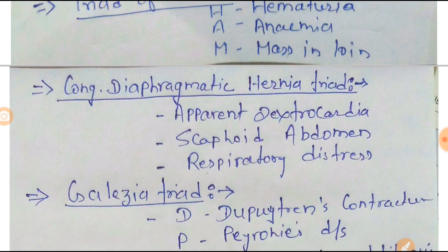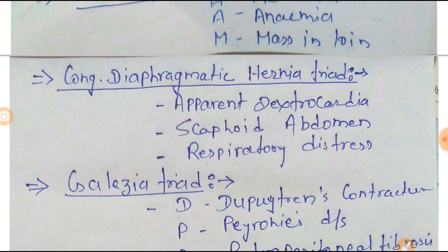Next one is the congenital diaphragmatic hernia triad. The triad is apparent dextrocardia — where the heart is rotated 180 degrees so the right atrium and right ventricle are on the left side, and the left atrium and left ventricle towards the right side — scaphoid abdomen, and respiratory distress.